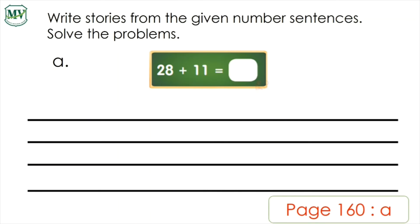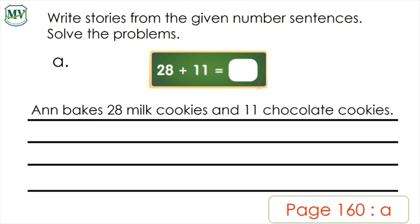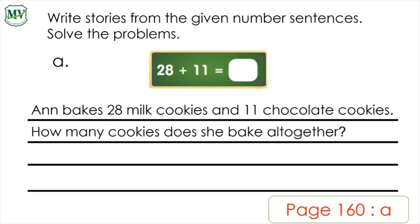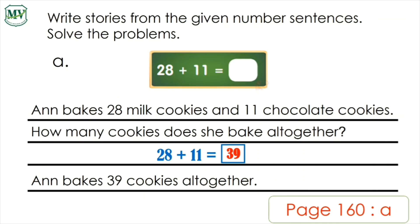Next, page 160, letter A. Let's write an addition story from the given number sentence. The number sentence is 28 plus 11 equals blank. The story is: Anne bakes 28 milk cookies and 11 chocolate cookies. The question is, how many cookies does she bake all together? The addition sentence is 28 plus 11 equals 39. Therefore, Anne bakes 39 cookies all together.